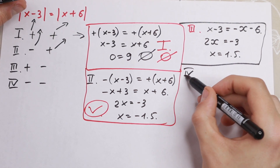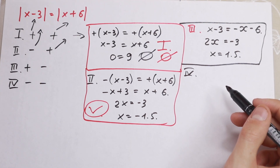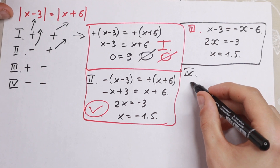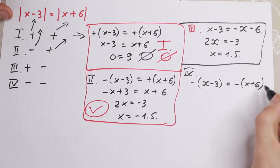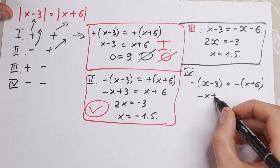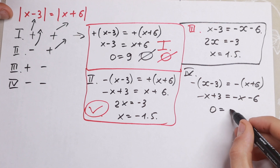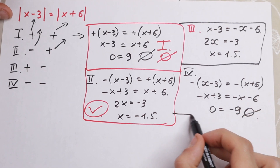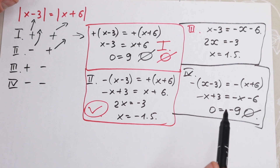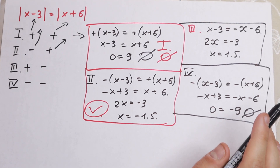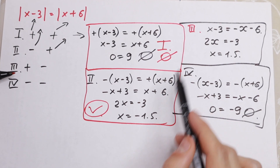For the fourth case — both negative — we will have minus x minus 3 equal to minus x plus 6. Opening parentheses: minus x plus 3 equal to minus x minus 6, giving us 0 equal to minus 9, which is incorrect. So, as you can see, we checked all four combinations. In most cases, the first and fourth cases do not have any solution, and sometimes the second or third also do not.